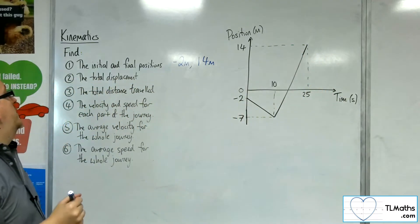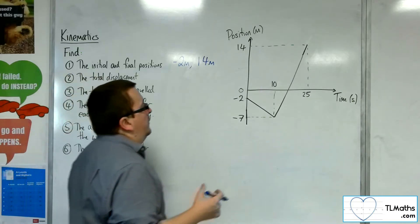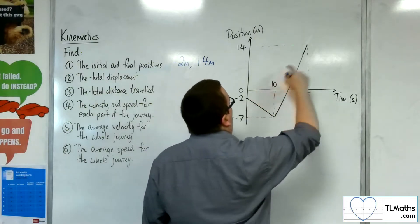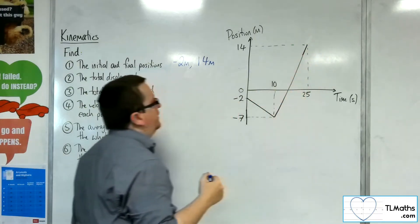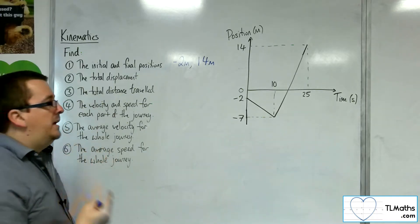So minus 2 metres to 14 metres. Find the total displacement: the fact that I started at minus 2 and wound up at 14 means that in total displacement I moved 16 metres.